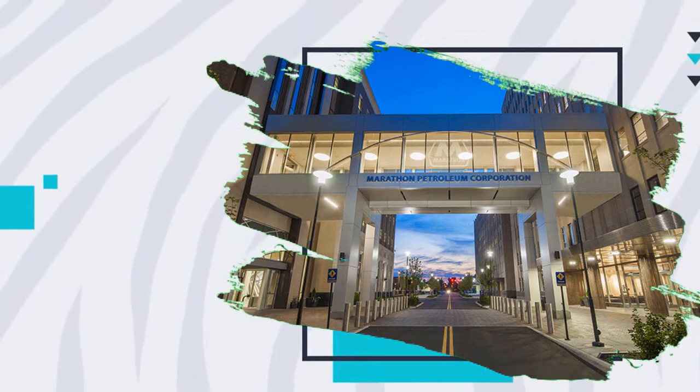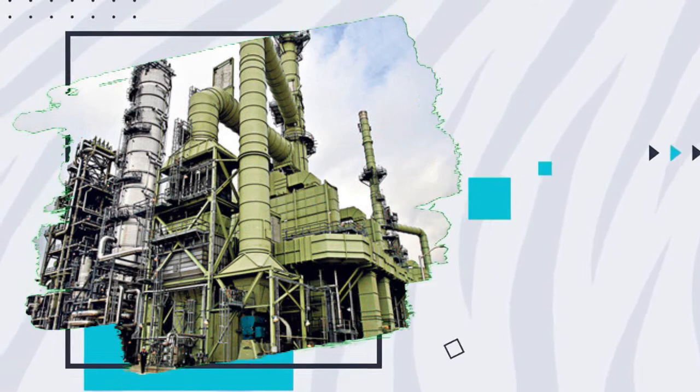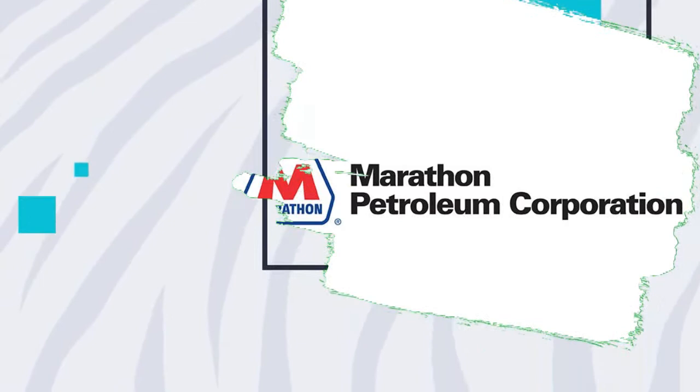The oil sands mining segment mines, extracts and transports bitumen from oil sands deposits in Alberta, Canada, and upgrades the bitumen to produce and market synthetic crude oil and vacuum gas oil.